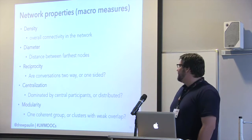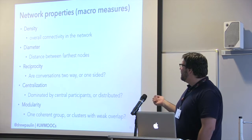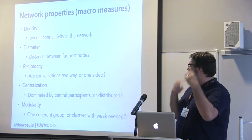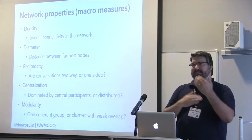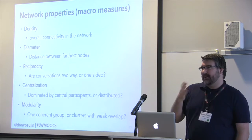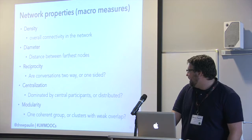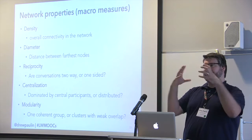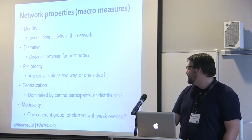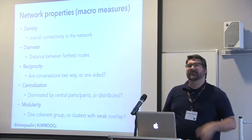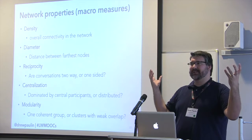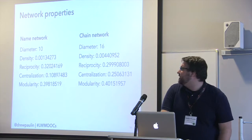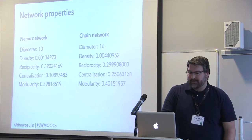Here are the network properties. Density is the overall connectivity of the network. Diameter is the distance between the farthest nodes — basically how far information has to travel. Reciprocity measures how bimodal the connections are. Centralization indicates how centralized the network is — whether it's really distributed or tightly knit amongst highly centralized nodes. Modularity describes whether individuals participate across different clusters or keep within the same ones.